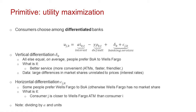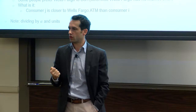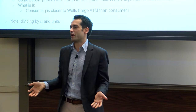Epsilon_jk captures horizontal differentiation — why even though on average people like Bank of America better than Wells Fargo, Nick might choose Bank of America but I go to Wells Fargo, because I live close to Wells Fargo, I like their ATMs, I like the services they offer. This explains why market shares aren't degenerate and both banks can have positive market share. These banking services are also important from the perspective of bank runs — they keep people sticky with banks, so even if the default rate goes up a bit, people don't just run out the door.